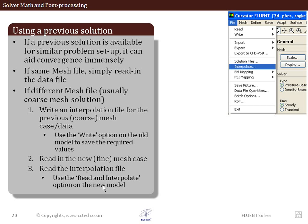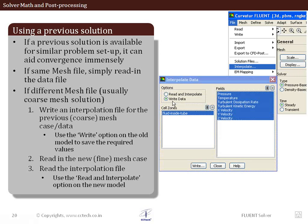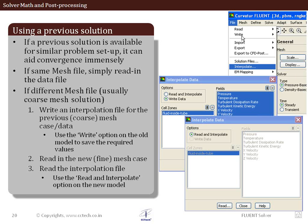You can also initialize a finer mesh using a solution from a previous coarser mesh. To do this, write an interpolation file from the coarse mesh solution via File > Interpolate > Write. Then open the finer mesh, go to File > Interpolate > Read, and load that file. The coarse mesh solution is then superimposed onto the finer mesh as the starting point for further iterations.